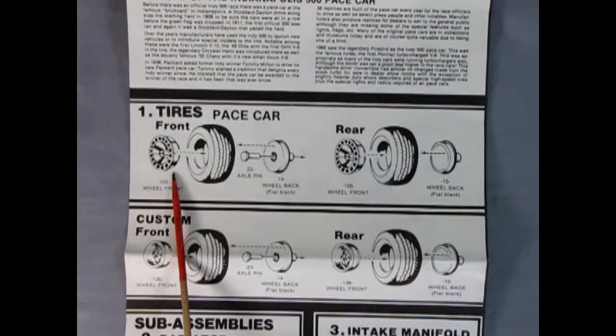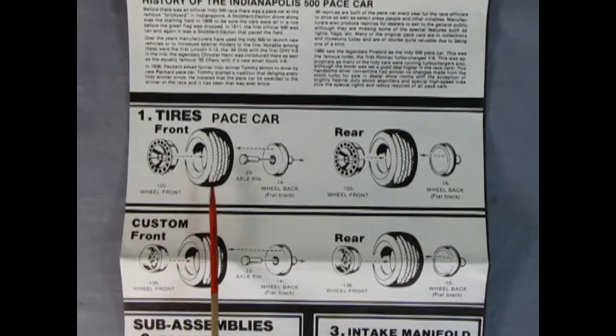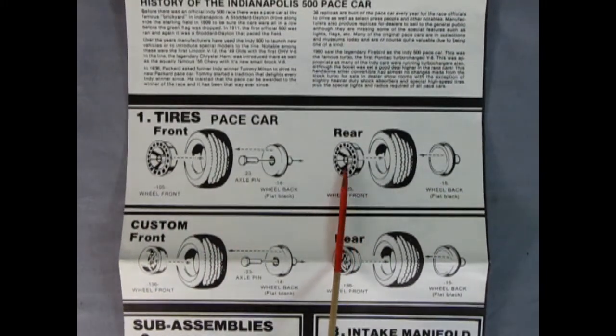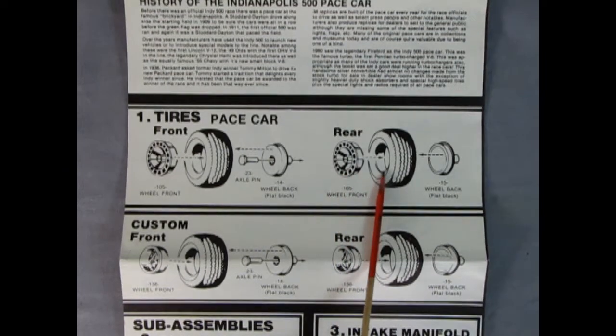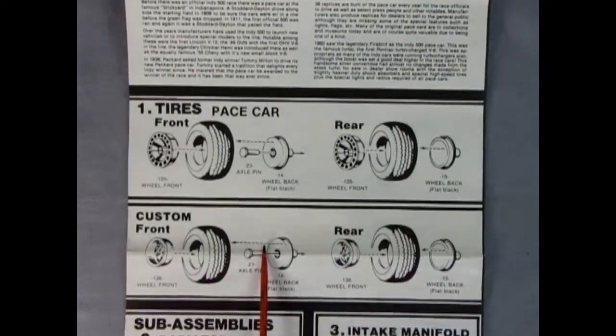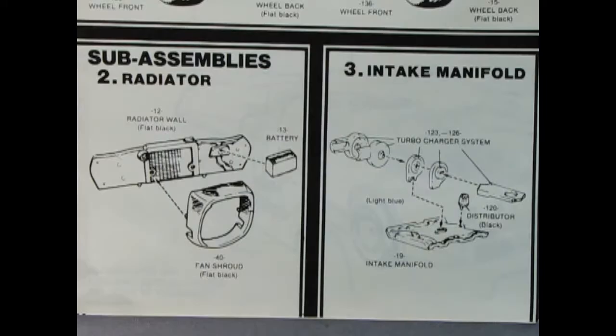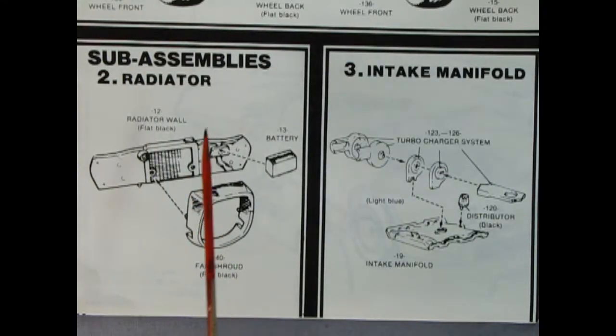And then we can see the tires on here, so you've got the original stock wheels and the tire, the backing plate and the axle pin, and for the rear we get that nice wheel again, the tire and the wheel back. And then we've got custom wheels as well so you could really spice up your car.